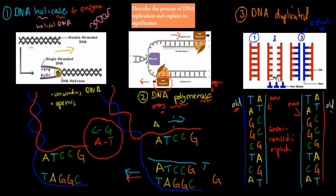The other polymerase goes in the opposite direction. At the end of all of this, you have two sets of DNA — so we had one strand initially, and then we have two strands. They result from semi-conservative replication, which means each new strand has one half from the original DNA.